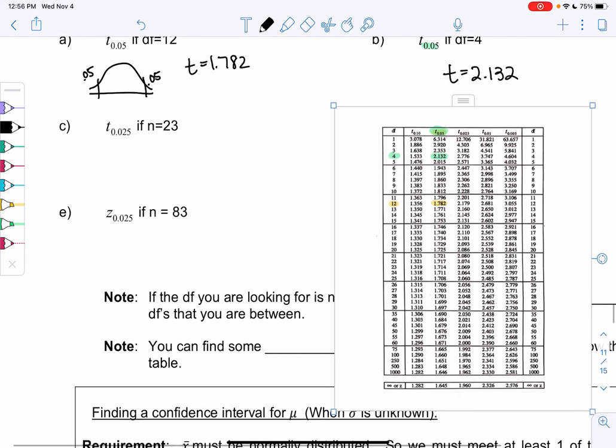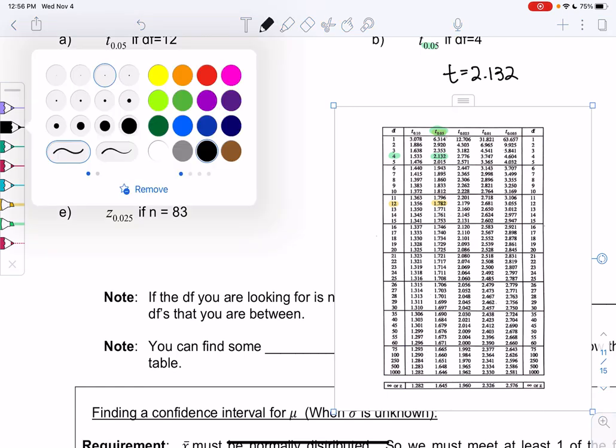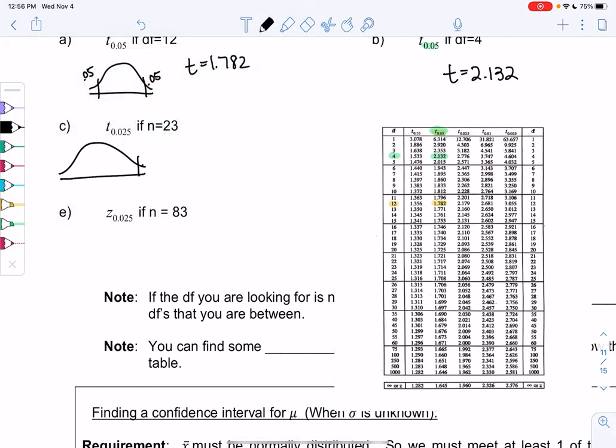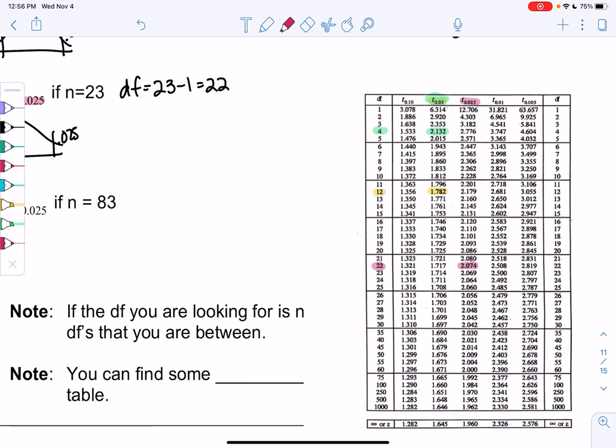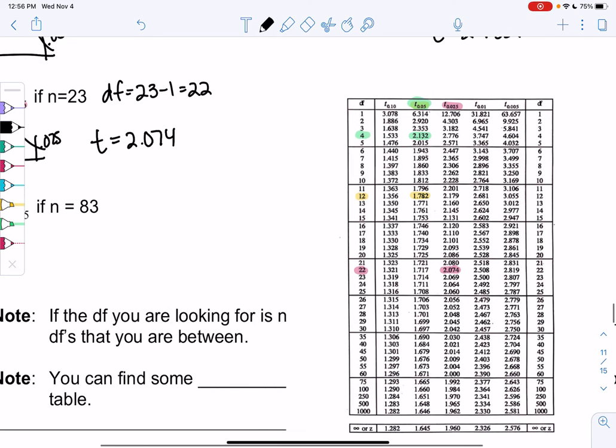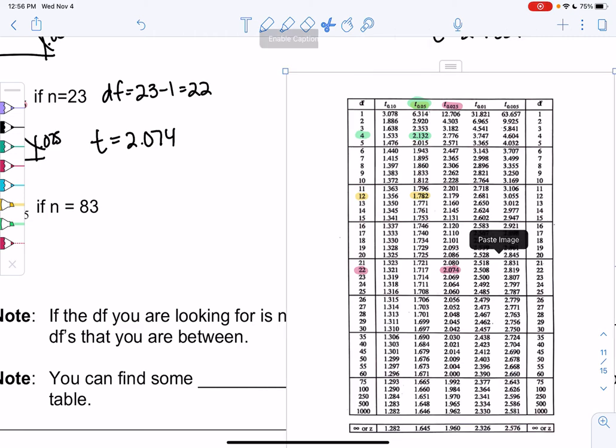T of 0.025, so the tails are now 0.025 rather than 0.05. These will be my tails when I'm doing confidence intervals. And N is 23, so that means we need degrees of freedom, would be 23 minus 1, or 22. So we'll go to the 0.025 column, which is the third one, and we'll go down to 22. And I get 2.074.